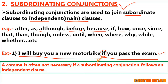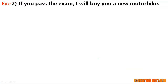But if I interchange the two clauses — like in the second example: 'If you pass the exam, I will buy you a new motorbike' — the sentence starts with the dependent clause 'if you pass the exam.' Remember: if a dependent clause comes first in a sentence, it needs to be followed by a comma.